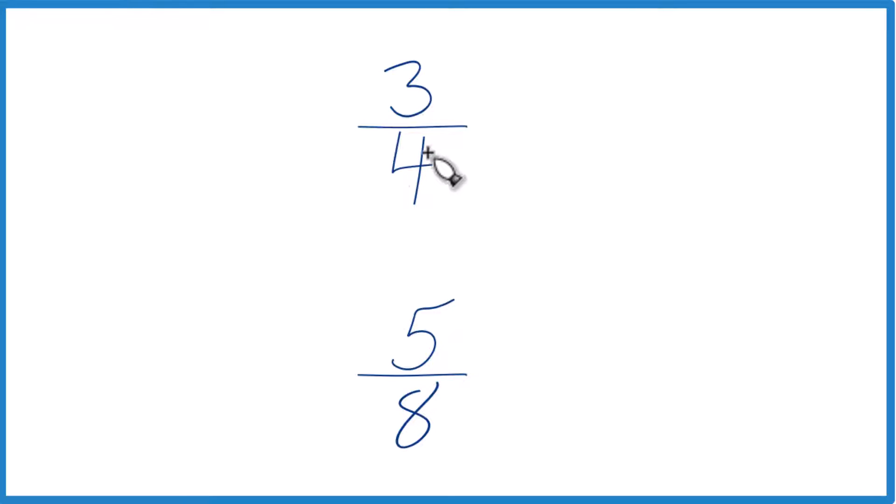The other way is to find a common denominator. Right now we have four and eight, but if that was the same, we could just compare the numerators and we'd be done.